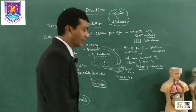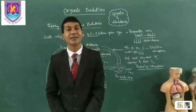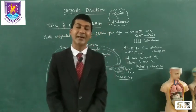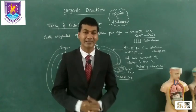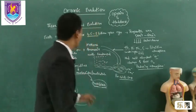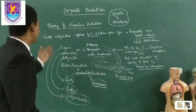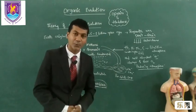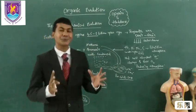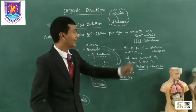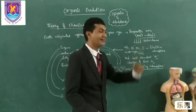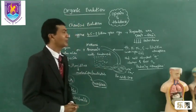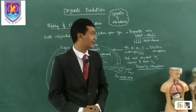Before discussing chemical evolution, let's cover the origin of the earth. We believe that the earth formed according to the Big Bang theory, approximately 4.5 to 5 billion years ago. At that time, the temperature was extremely high — around 5000 to 6000 degrees Celsius — and it started cooling down over several million years.